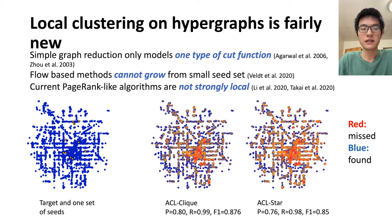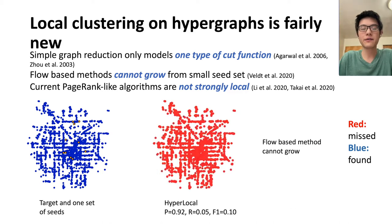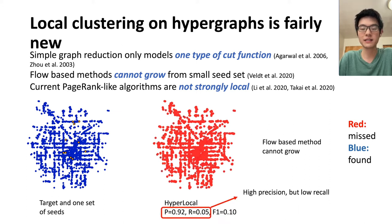The first set of algorithms simply reduces the hypergraph into a graph by either converting each hyperedge into a clique or into a star. Consequently, this kind of algorithm can only model one type of splitting cut function, and as you can see from the results, they can make a lot of mistakes. The next set of algorithms converts the local clustering problem into a series of maximum flow computations. By design, this kind of algorithm is used to improve the cluster, assuming the input has already overlapped a lot with your target cluster, meaning it cannot grow from a small seed set. You can see it gives very high precision but very low recall.